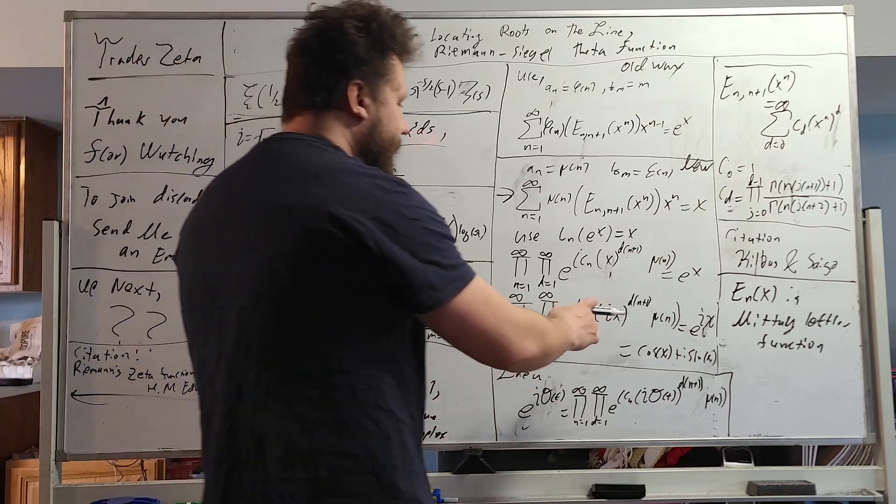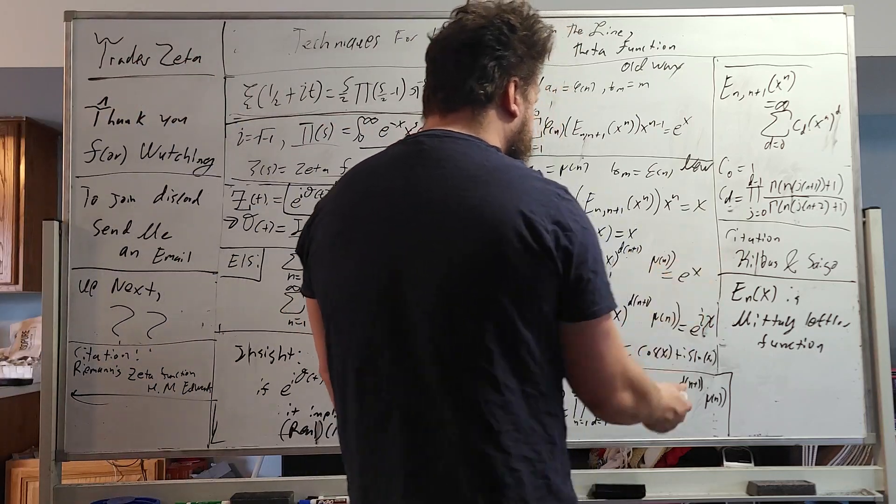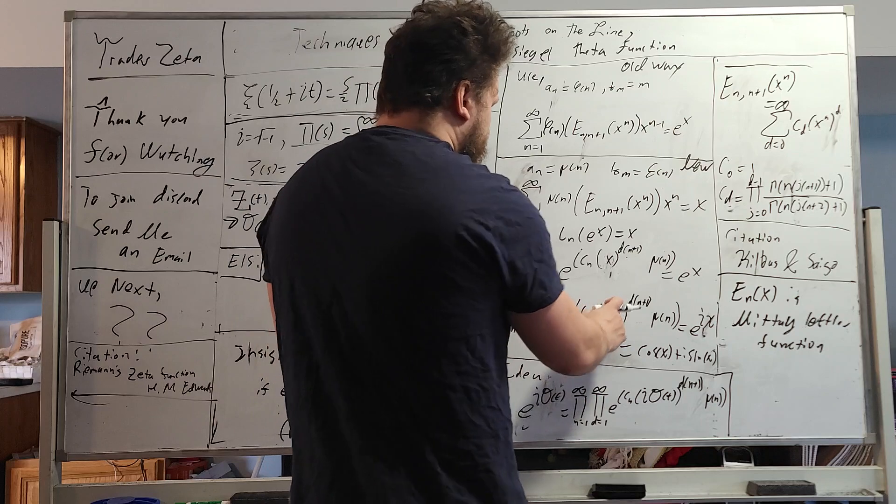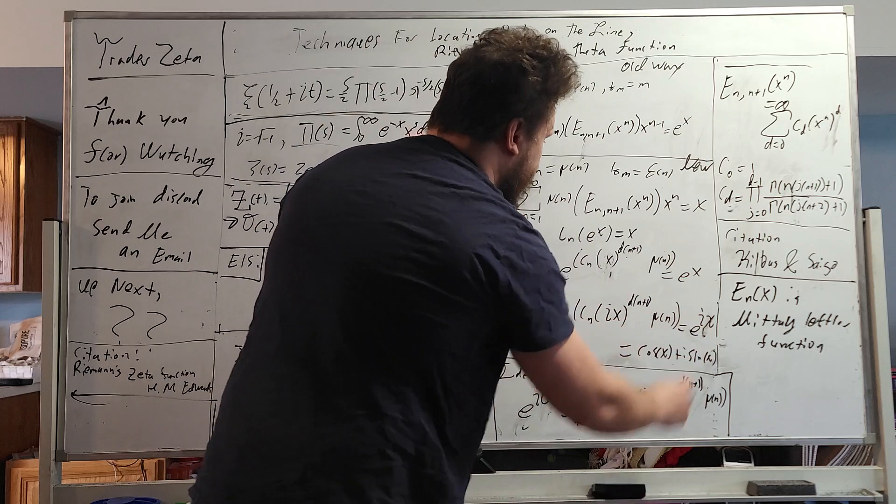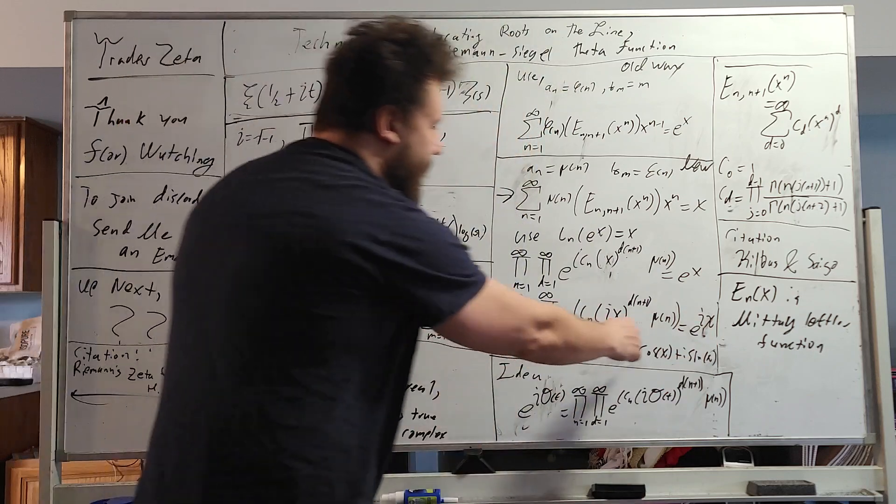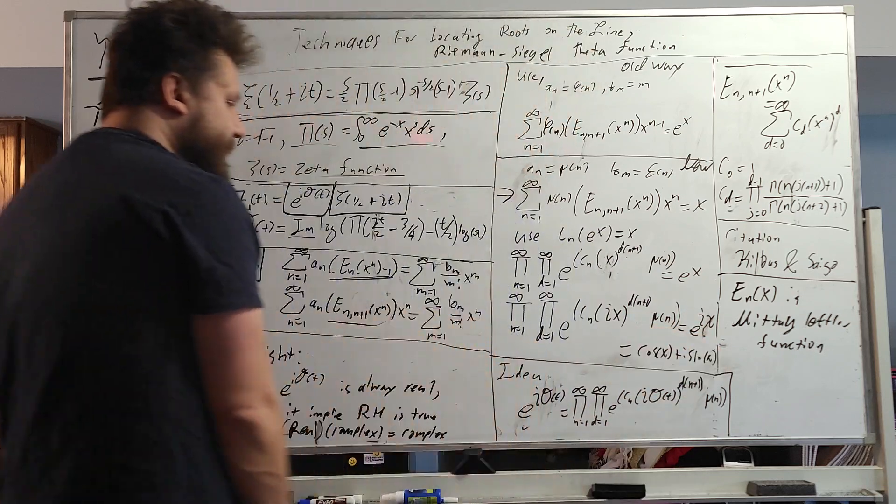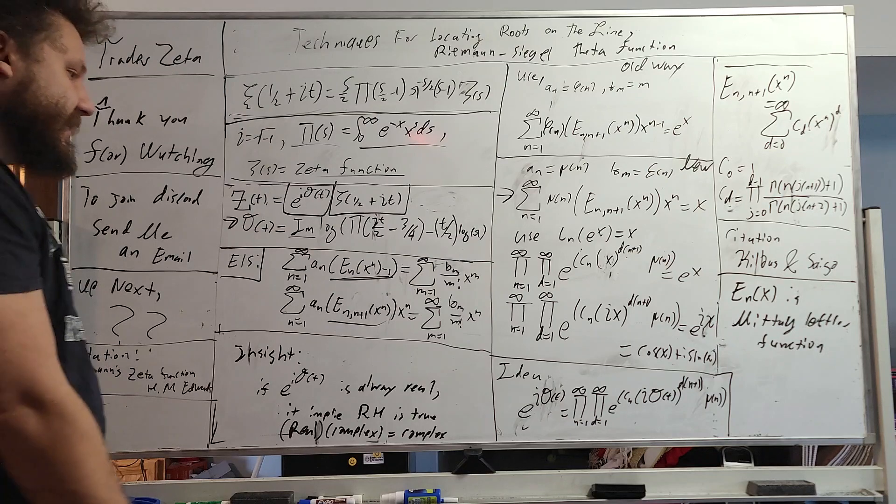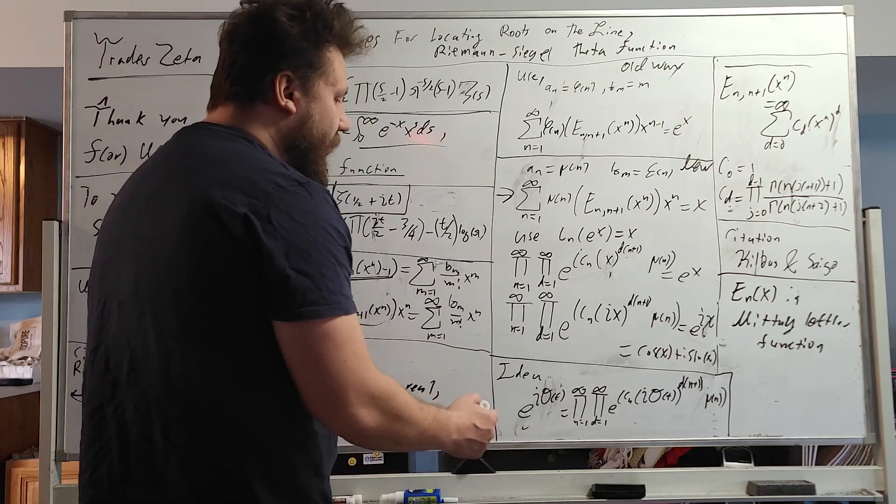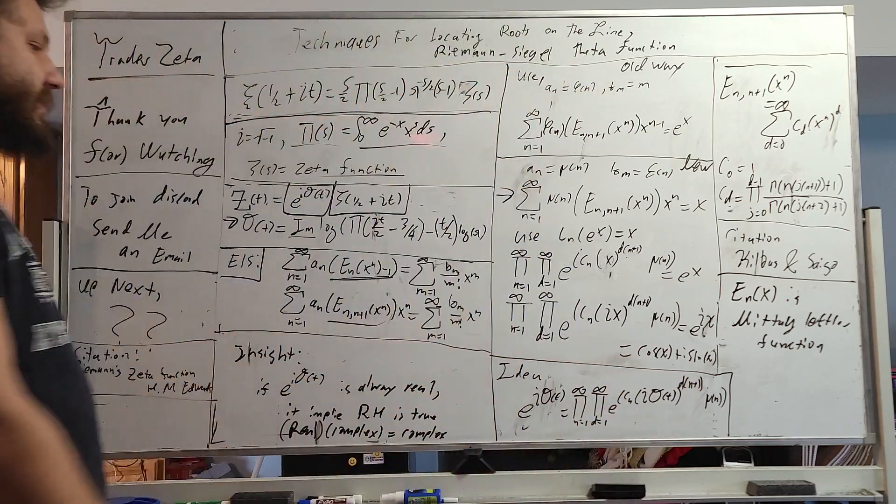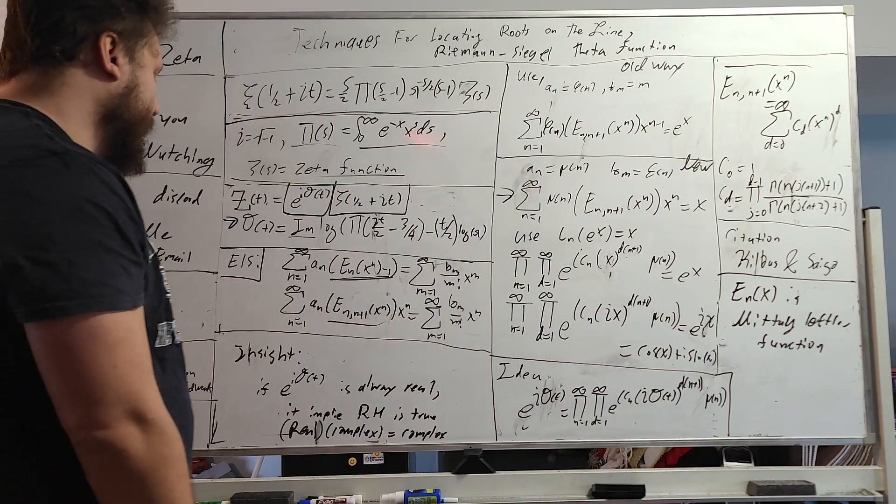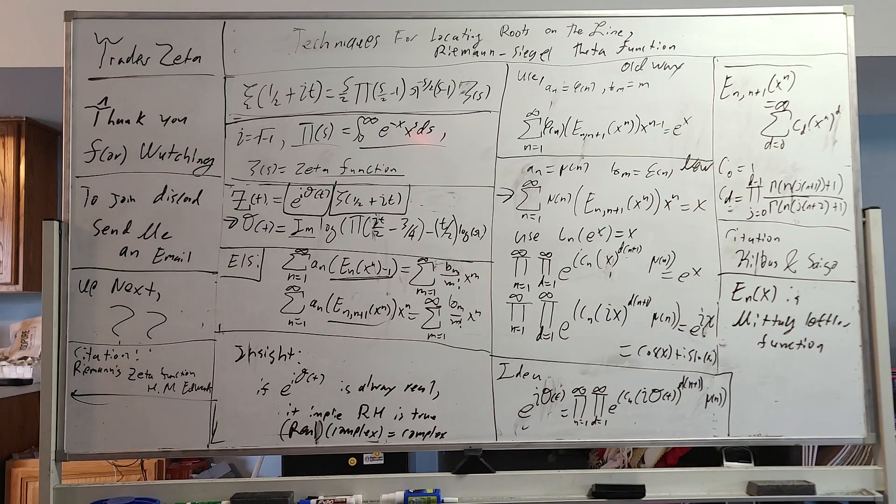All right, once you have this e to the x, you can instantaneously plug in an ix, right? This is the best part, that we now have a product series representation for cos x plus i sine x. And the idea is that we're going to plug in our Riemann-Siegel theta function in right here, and we're going to look at it in a very deep way. So let me flip the board.